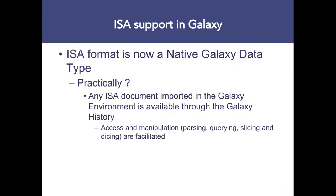What does this mean actively for the project? We have developed, working with Galaxy, an ISA data type that makes the ISA syntax natively accessible to the Galaxy environment. Practically, this means the tools we've built immediately recognise the ISA format, creating ISA history data access objects in the Galaxy environment, which makes it completely transparent and easy to use from the tool — allowing us to access, parse, query, and slice the information.